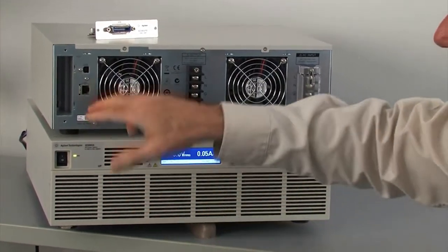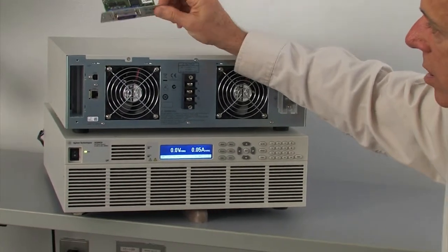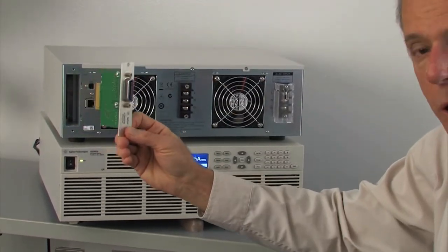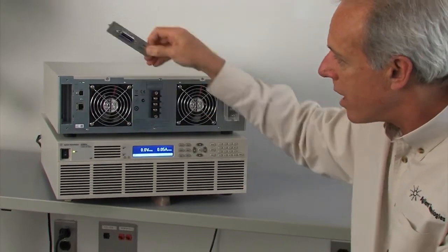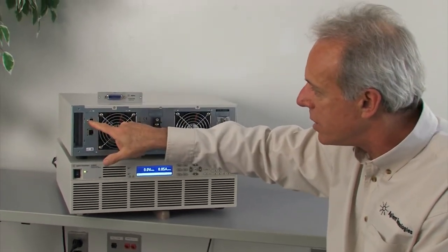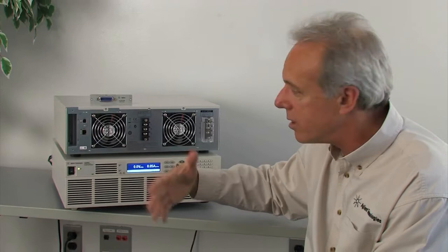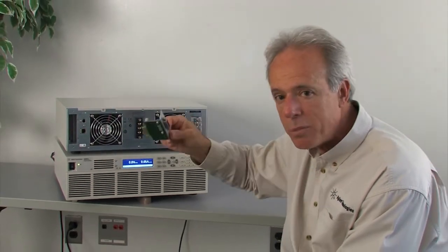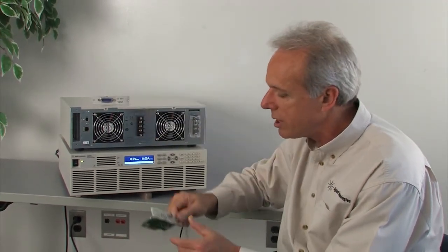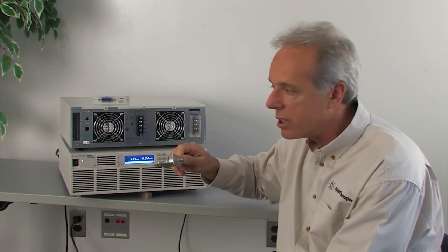Now, just so you know, this slot also could house the optional GPIB card. What's built into these products is LAN and USB for programming, but optionally GPIB, or optionally this analog programming card, which is what I'll talk about here today.